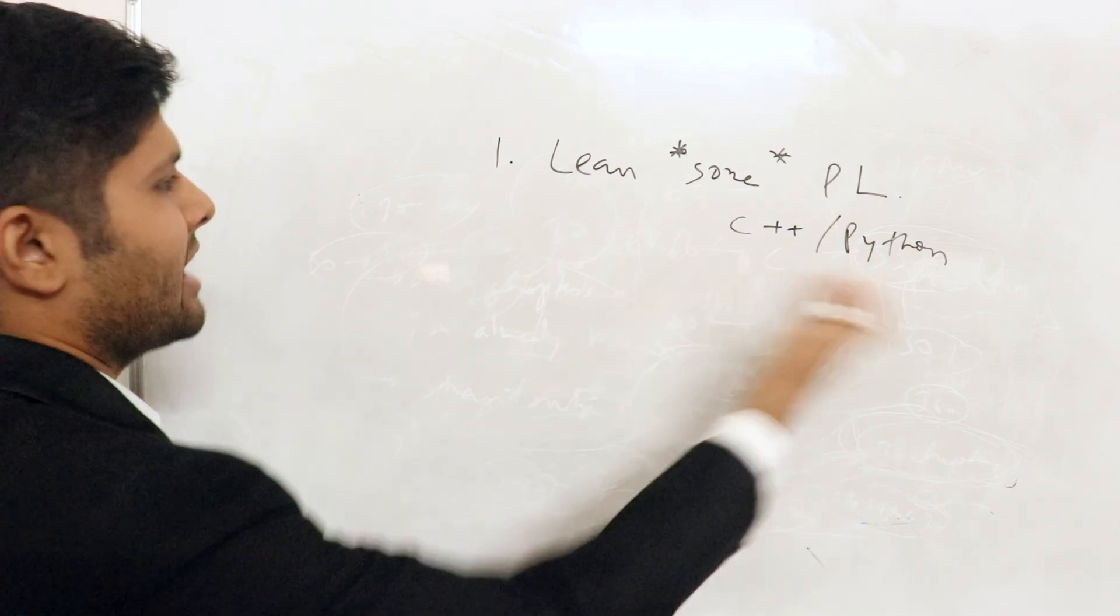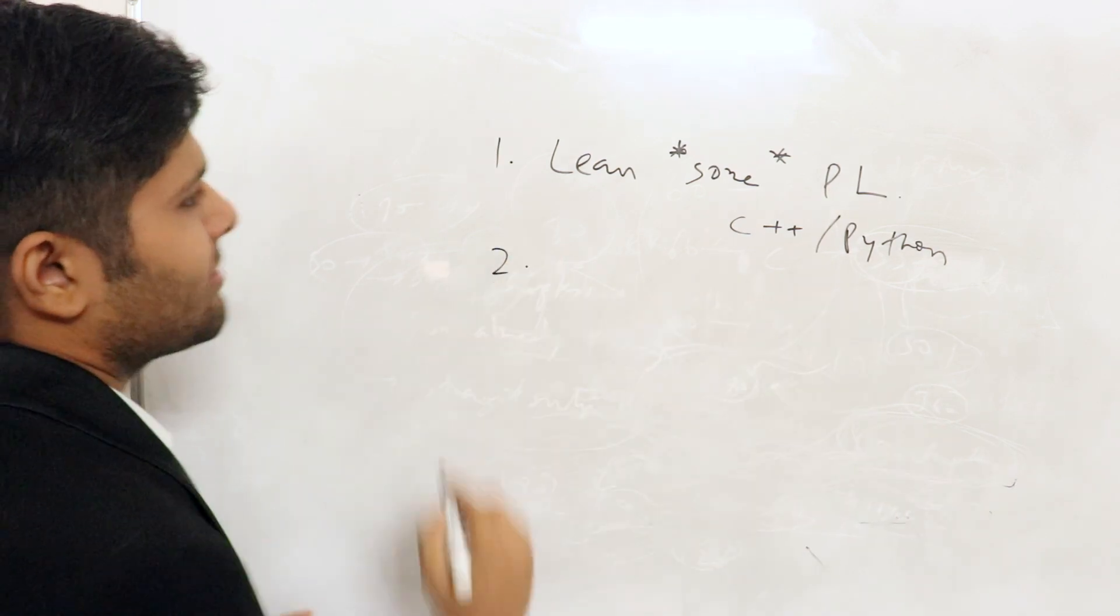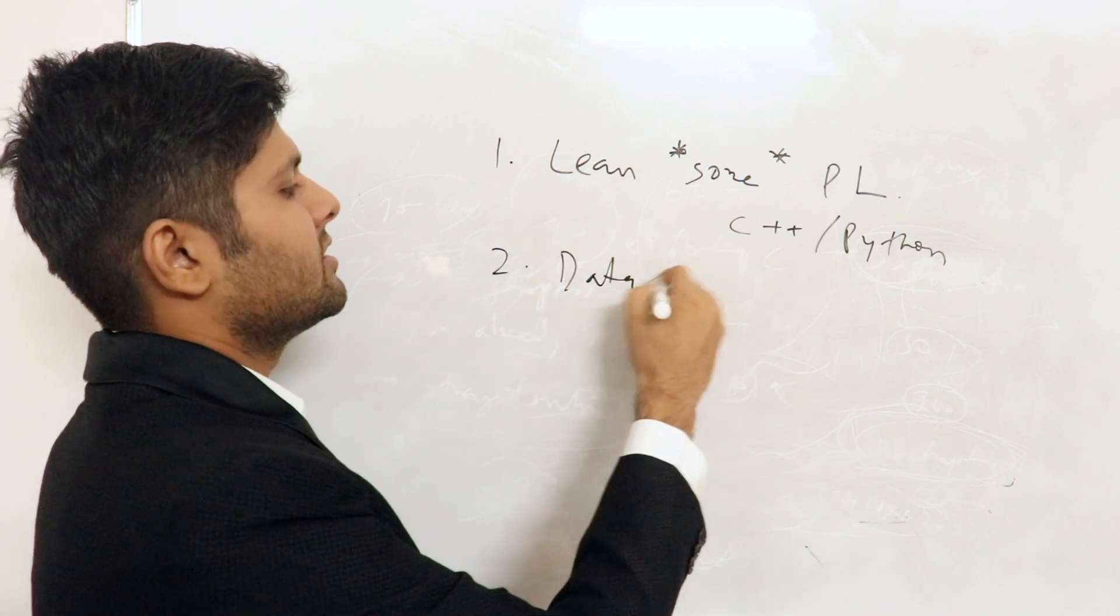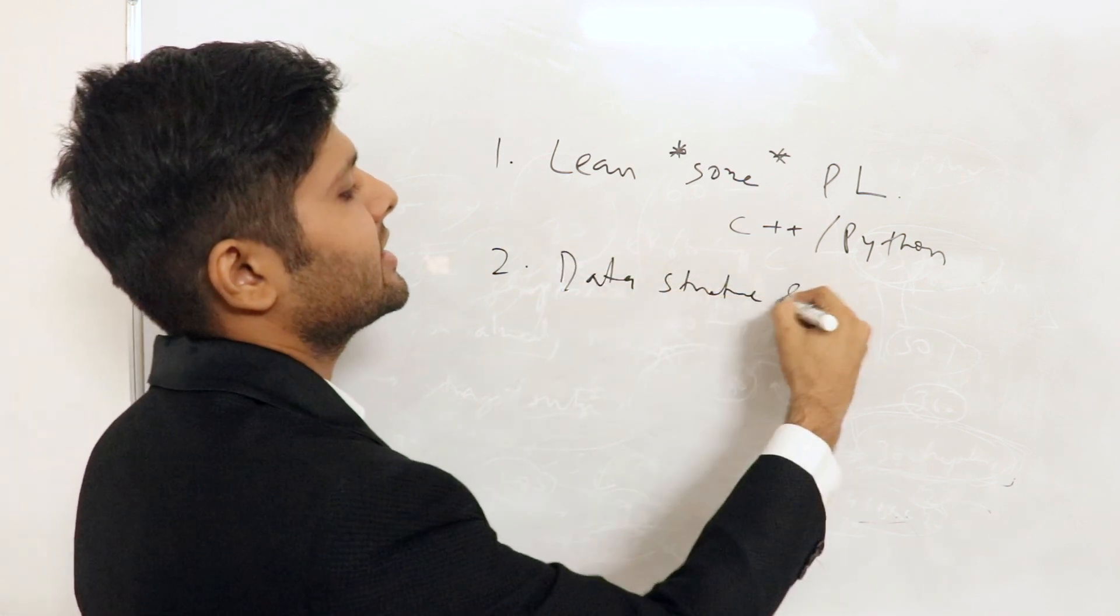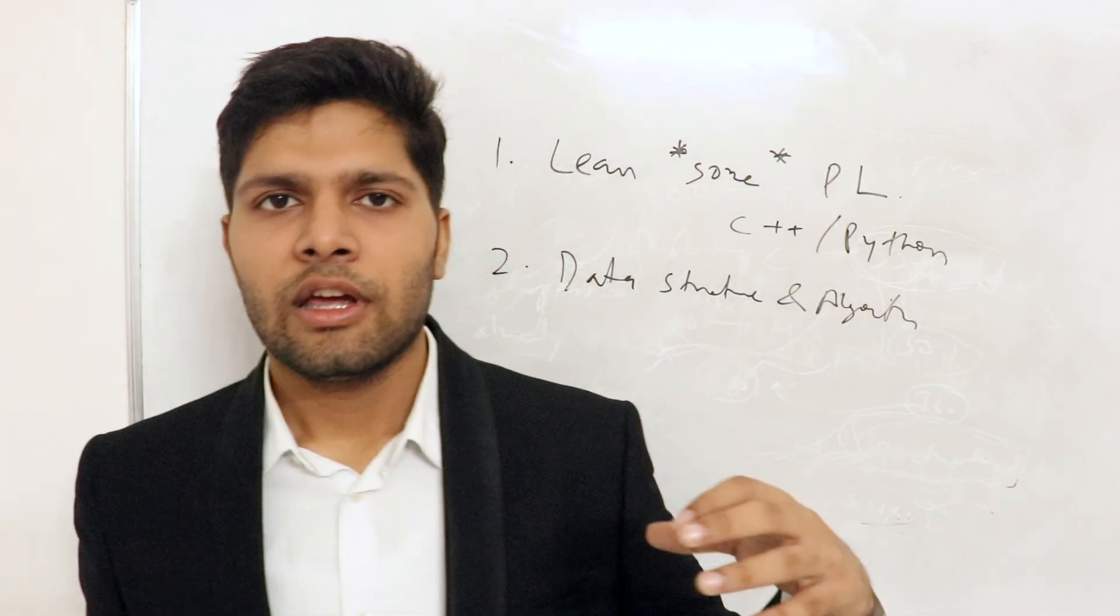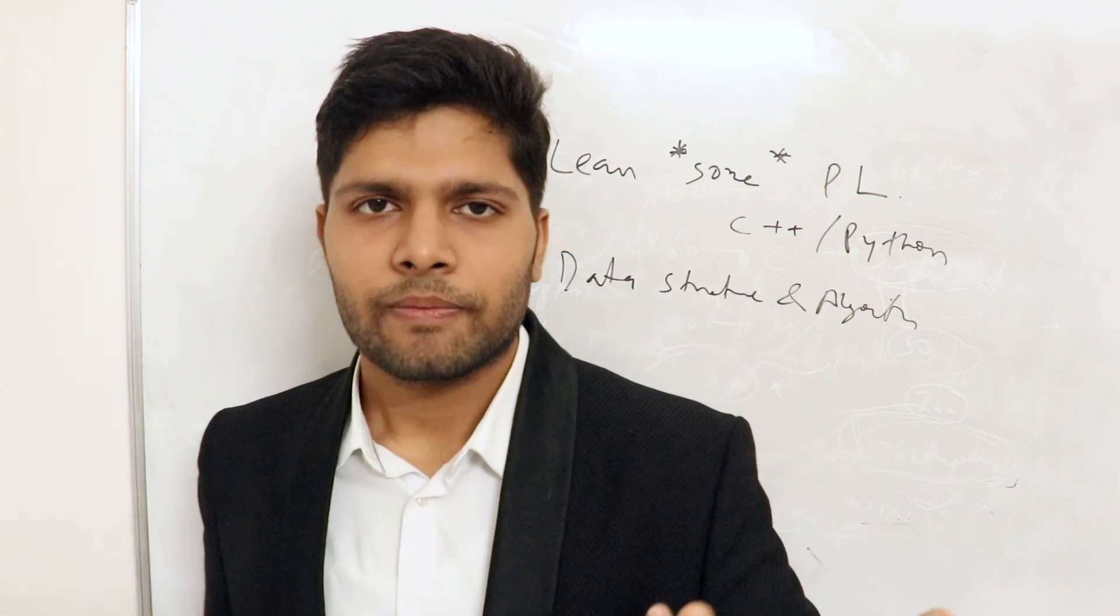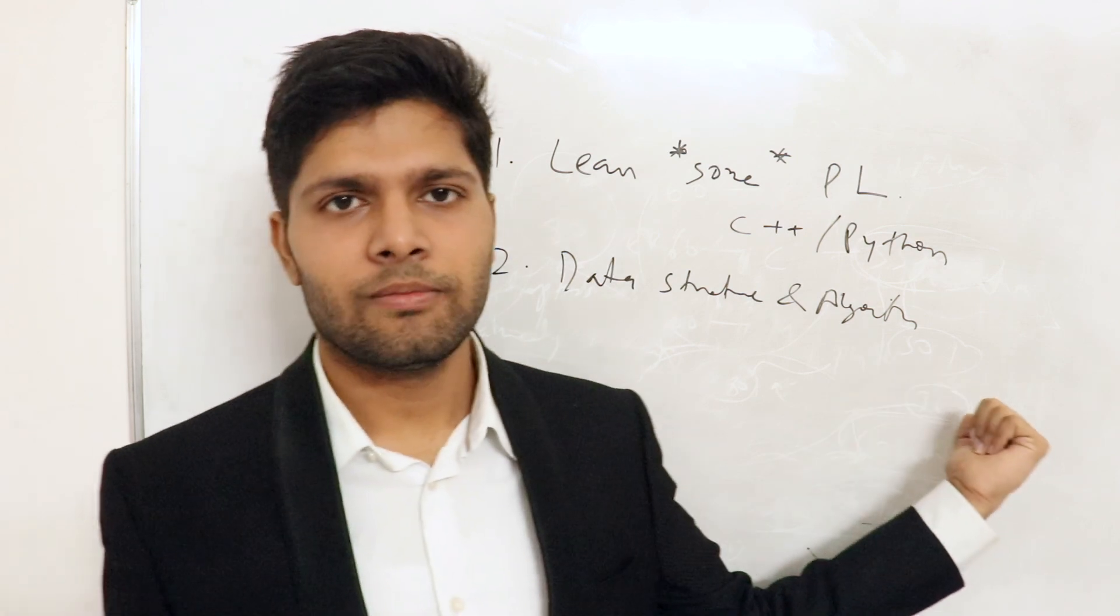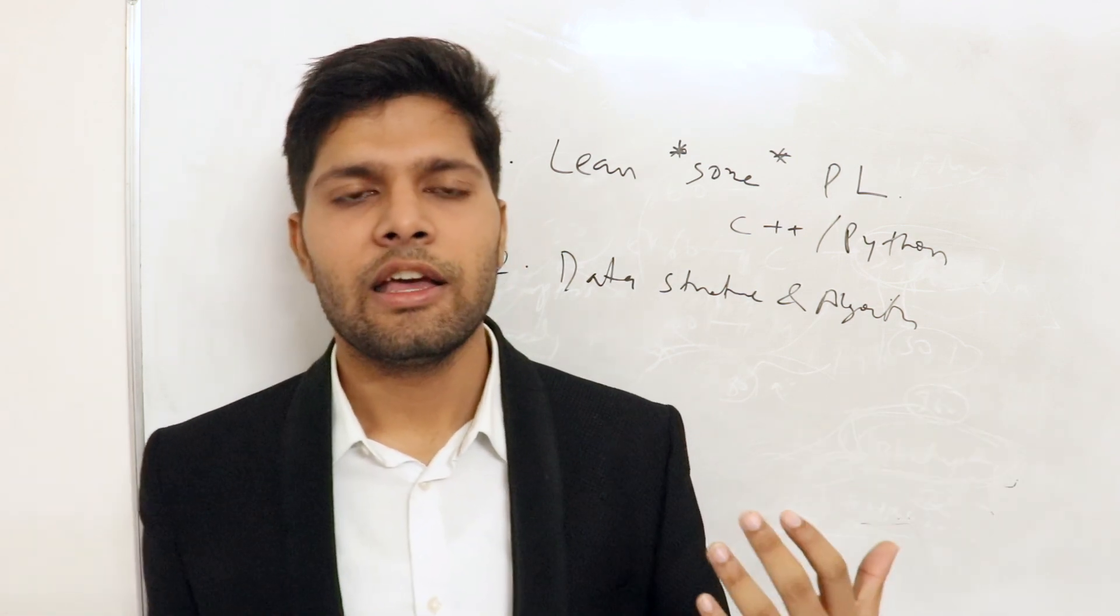The second step is that you learn data structures and algorithms. So what are data structures and algorithms? Programming language is something that you use to give instructions to a computer. What that instruction is, is called an algorithm.